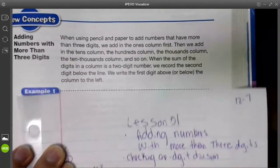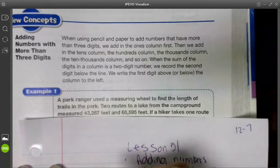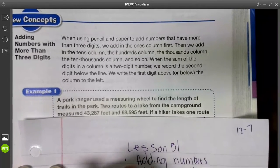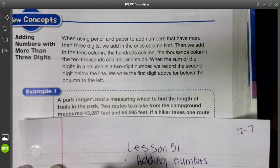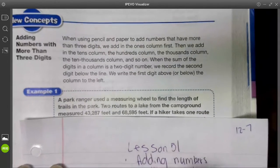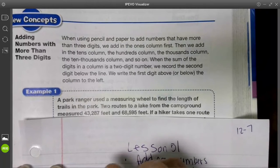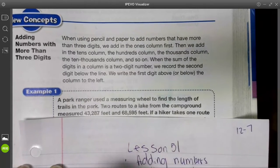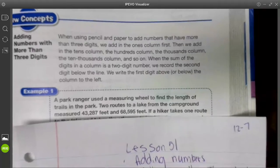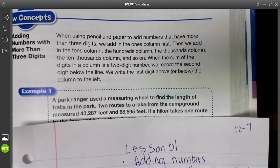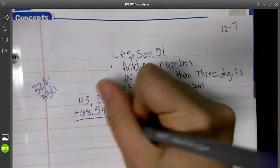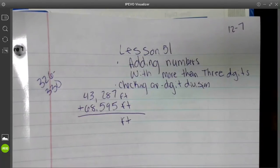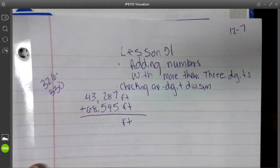Okay, so all we're doing is adding these two numbers together. That will make his round trip. We're going to copy the numbers down, so we got 43,287. I'll move my paper up in just a minute. And 68,595. And I'm going to write feet next to that so I don't forget my label at the end of the problem. It was very important.